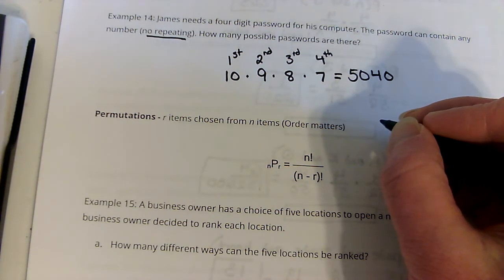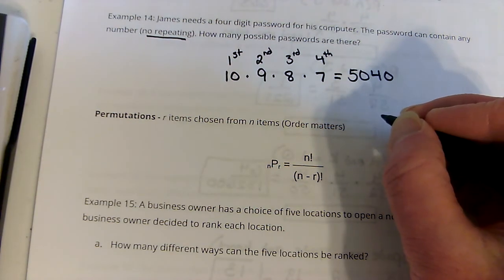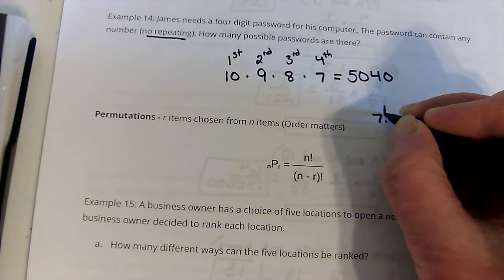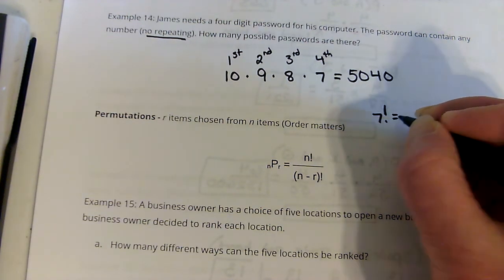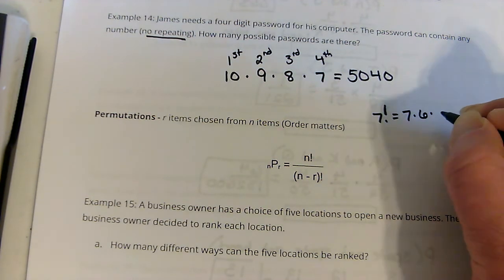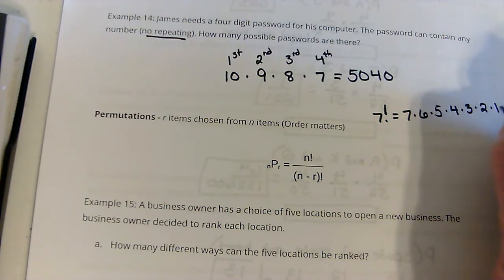Let's say I wanted to do 7 factorial. What that means is that I would take 7 times 6 times 5 times 4 times 3 times 2 times 1.